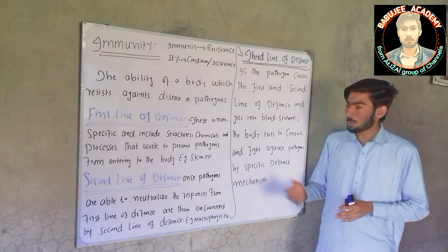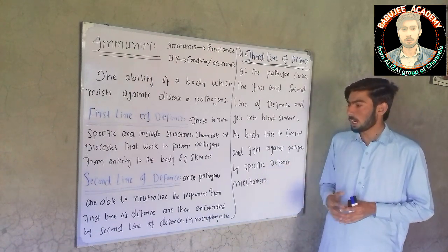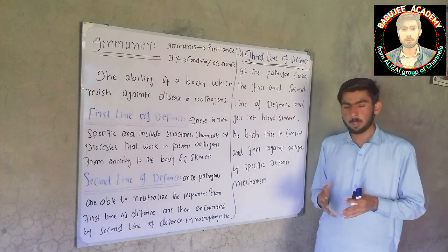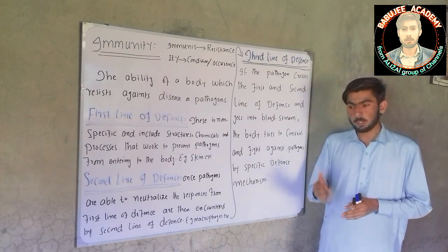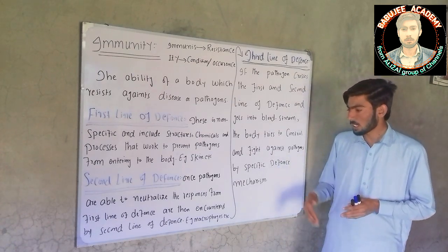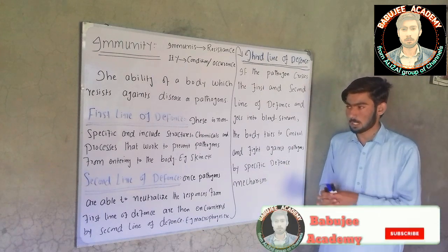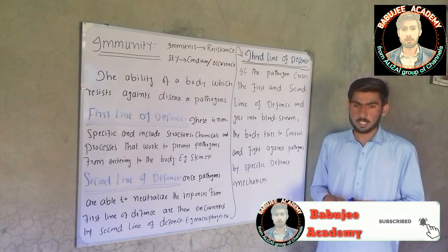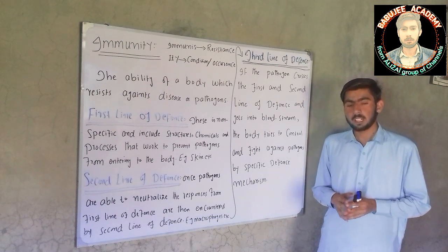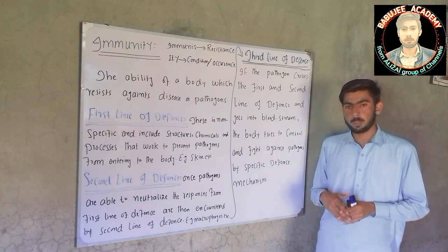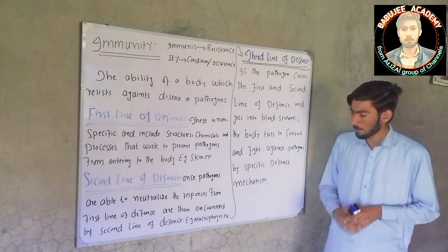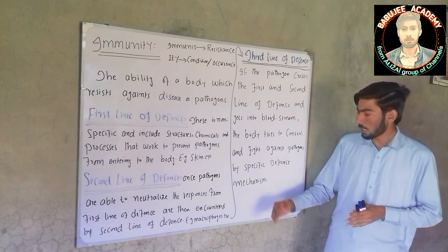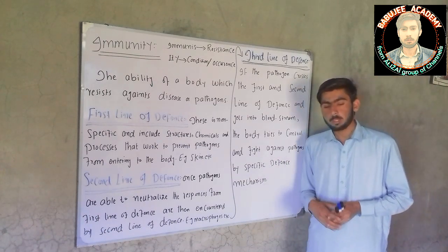Second line of defense: once pathogens are able to neutralize the response from the first line of defense and have entered the body, they are encountered by the second line of defense. The example of the second line of defense is macrophages.